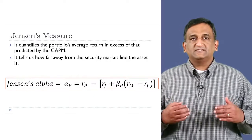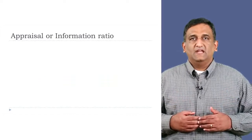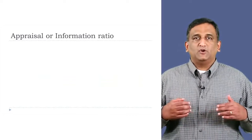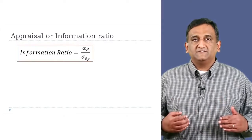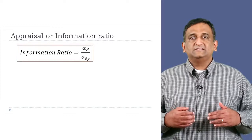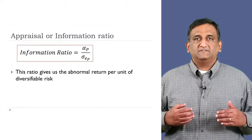A fourth risk-adjusted performance measure is the appraisal or information ratio. It is defined as the portfolio alpha or Jensen's measure divided by the diversifiable risk of the portfolio. This ratio gives us the abnormal return per unit of diversifiable risk.